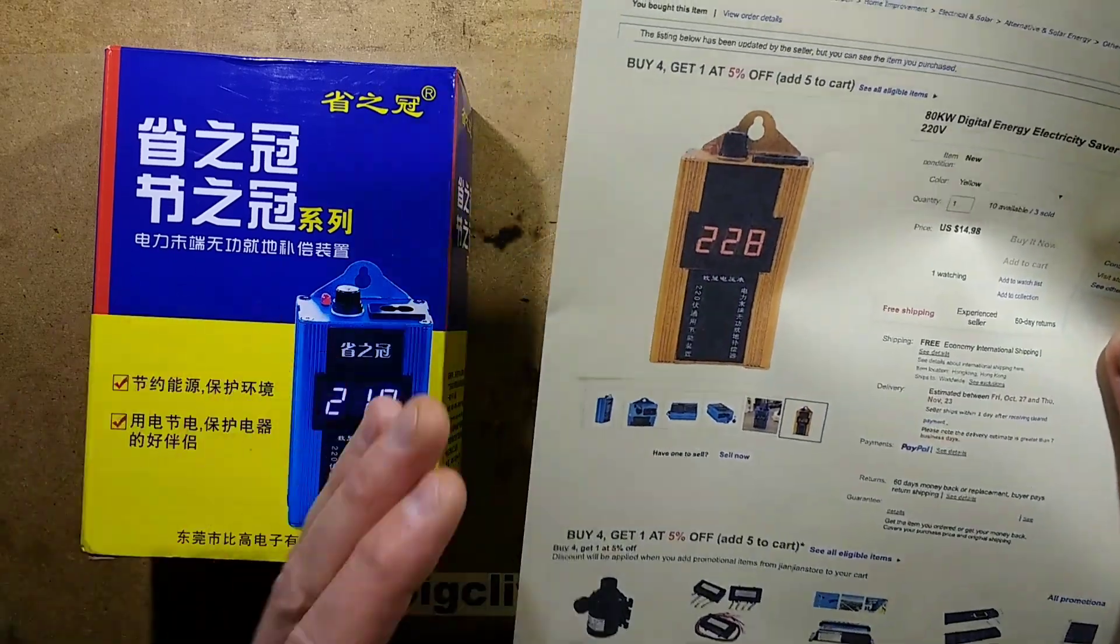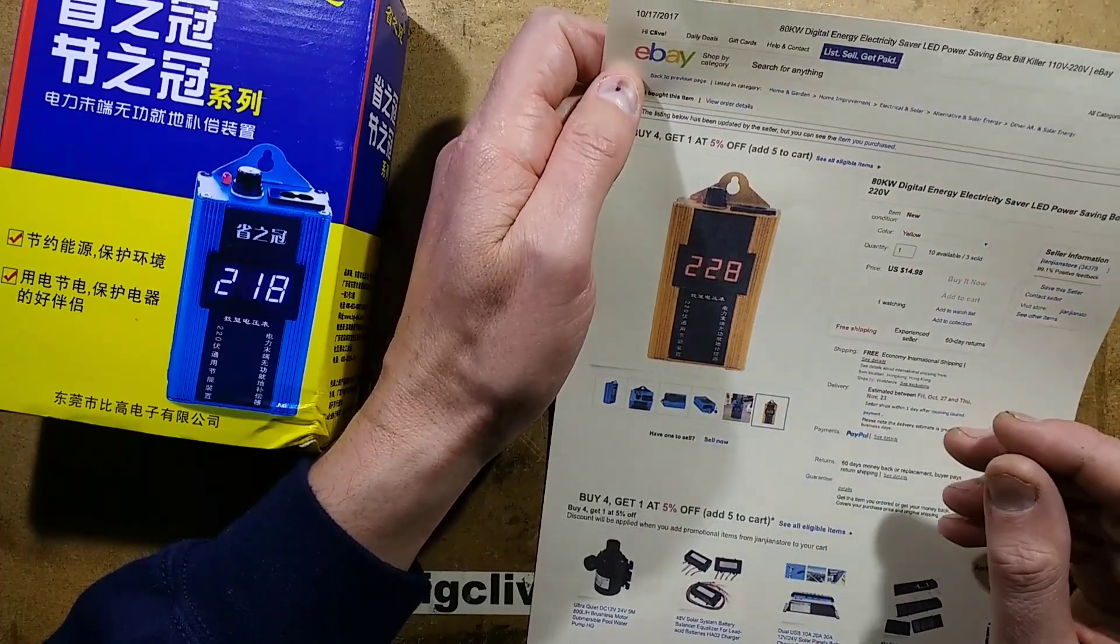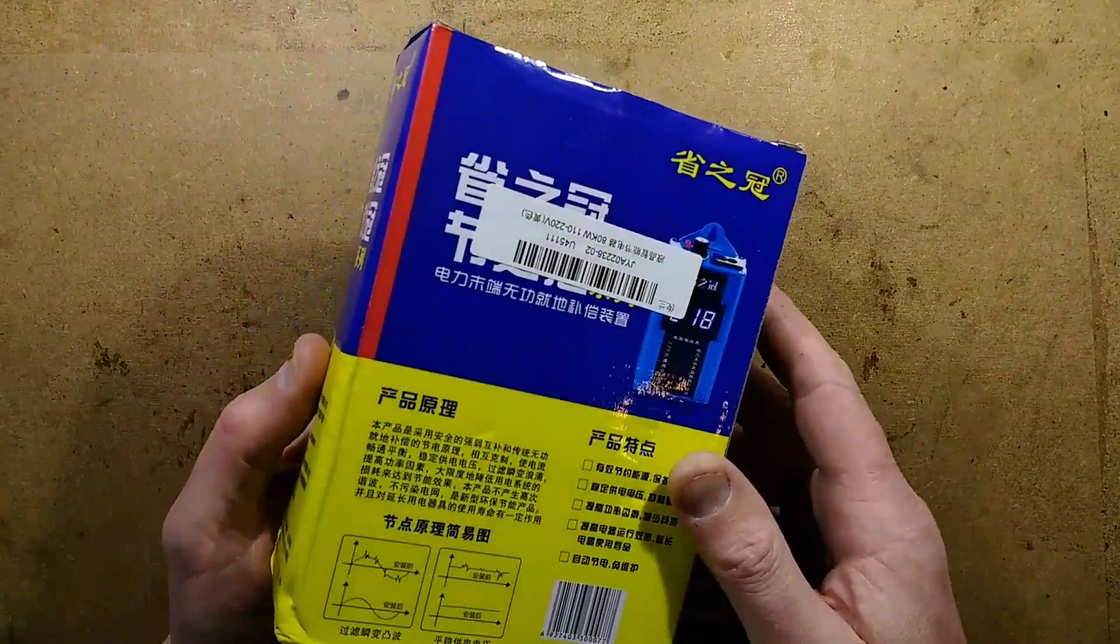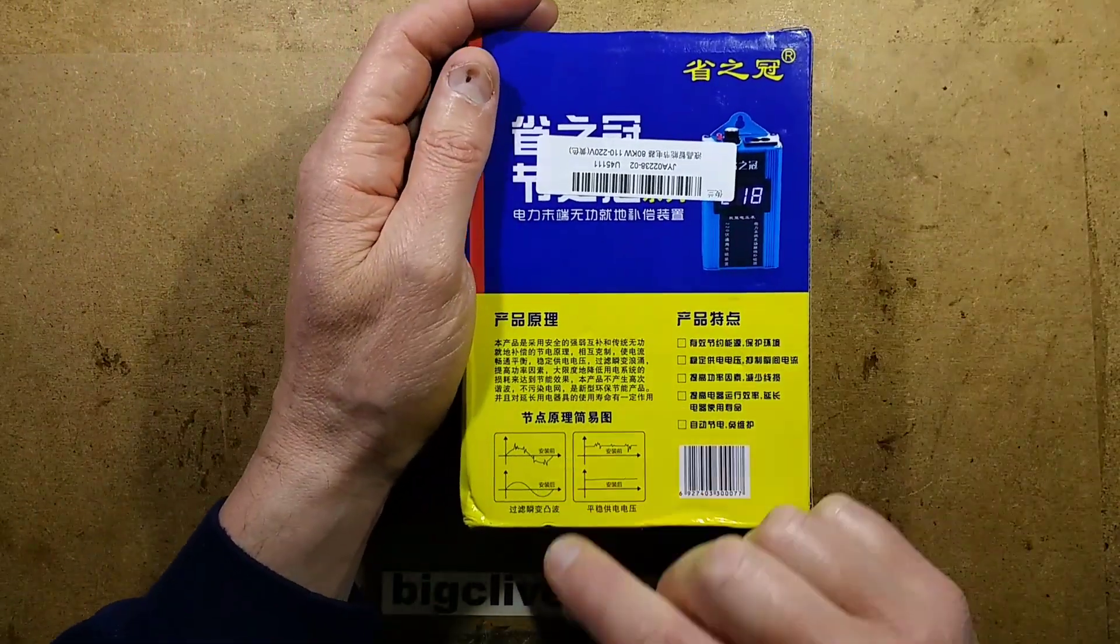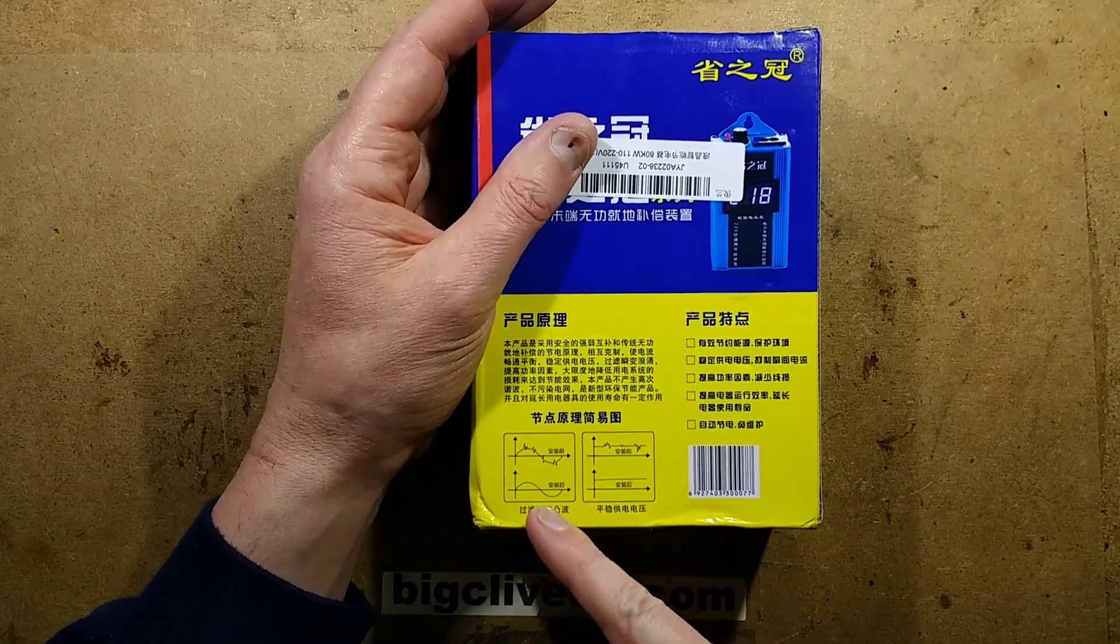So if your name's Bill, you're screwed. The idea is that you just plug them in a socket and they save you a fortune. Your meter runs slower. But in the back of the box, it shows a distorted sine wave with glitches and spikes, and then it shows the lovely clean sine wave.